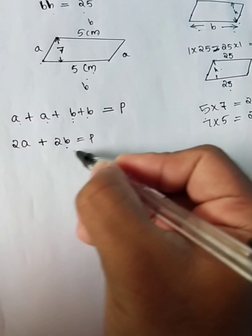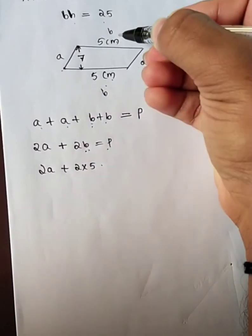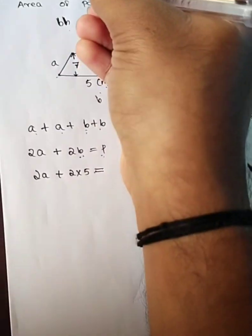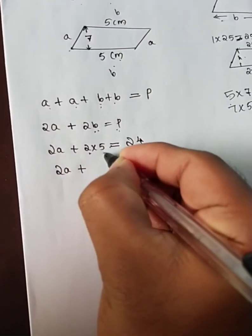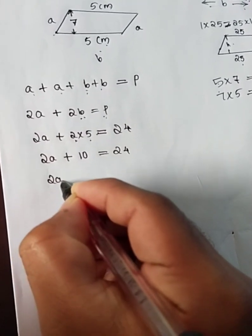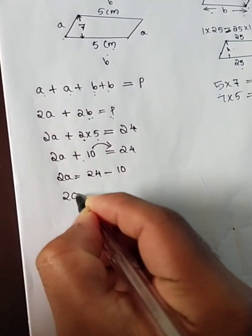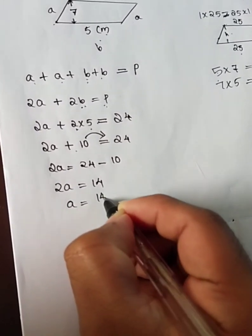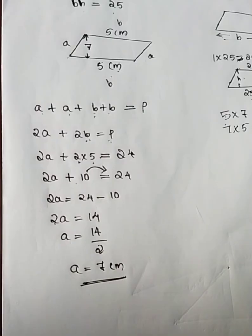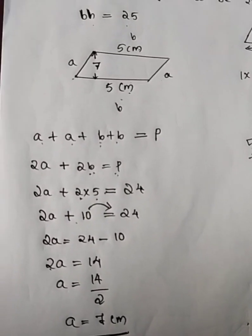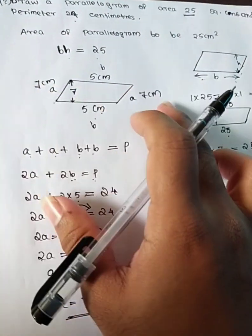So: 2a plus 2b equals P, which is 24. Two times five is ten. Twenty-four minus ten equals fourteen. A equals fourteen divided by two, so a equals seven.